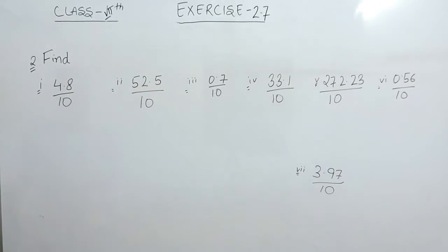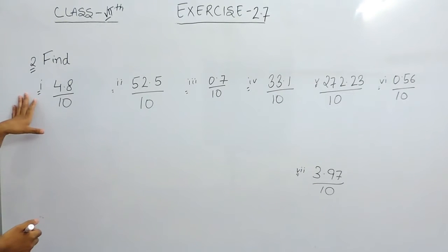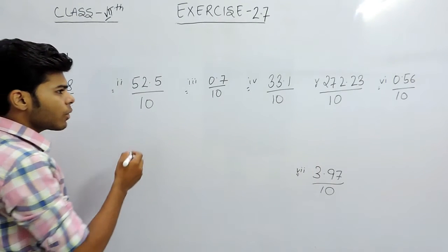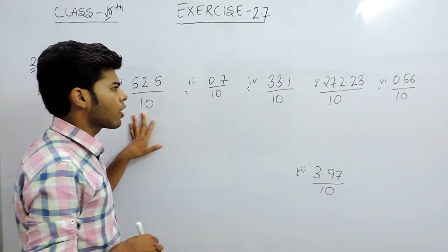Hello school rooms. Now we will solve the second question of exercise 2.7. This question is simply about decimal division, and here you can see that in the denominator it is 10 or a multiple of 10.